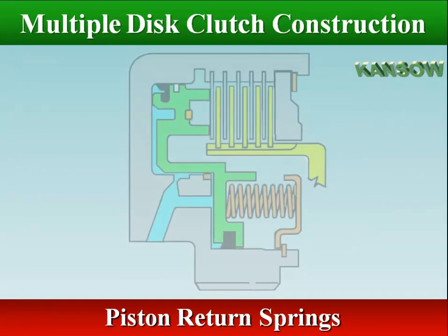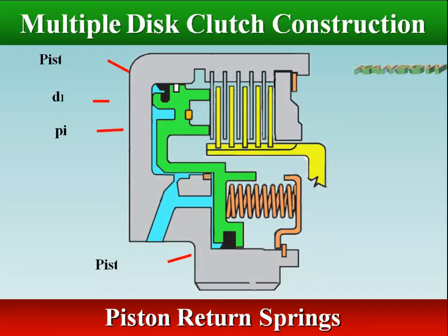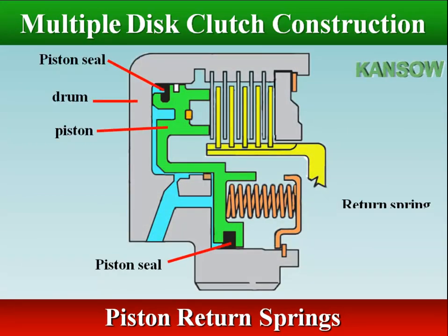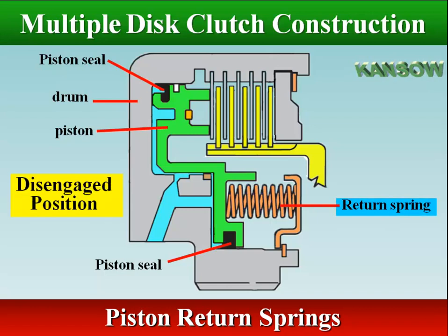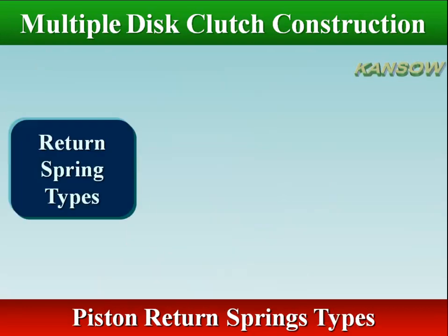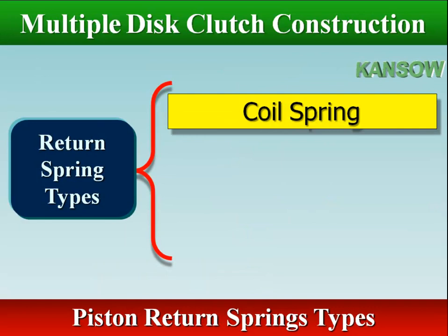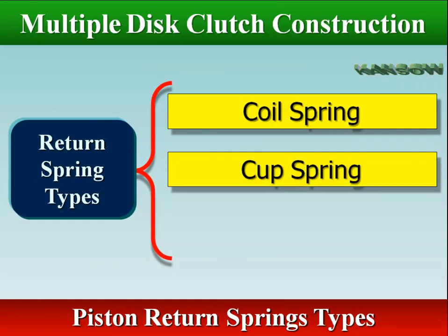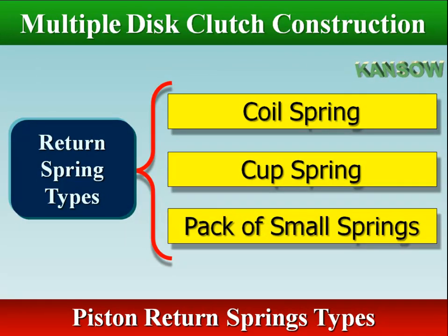The piston return springs overcome the residual fluid pressure in the cylinder and move the piston to the disengaged position when clutch action is no longer needed. The piston release can be effected by one large coil spring, or by a cup spring, or by a pack containing many small springs.